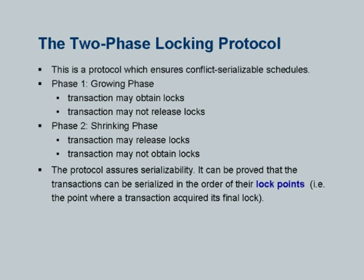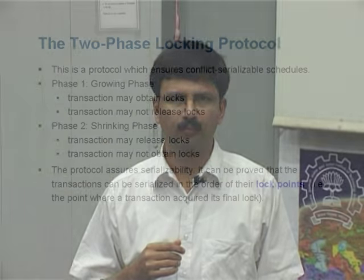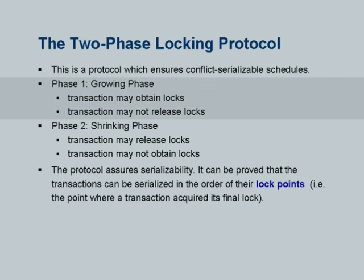Now let us come back to the problem of a transaction getting S locks before reading and X locks before writing, but still having issues. The answer is to follow what is called the two-phase locking protocol. There are two phases: a growing phase where a transaction may obtain locks but cannot release them, and a shrinking phase where a transaction can release locks but cannot acquire new ones. These phases are per transaction. The moment a transaction releases its first lock, it cannot acquire any more locks.